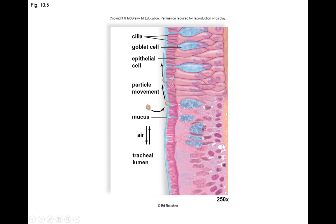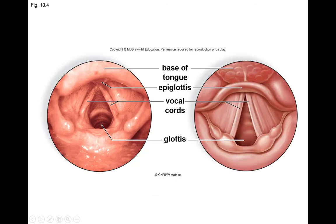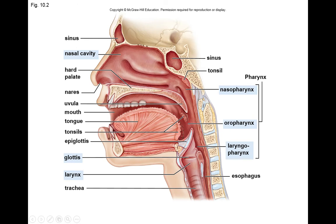A particle suspended in the air that we breathe gets caught on the mucus membrane of the airways, and the cilia beat it up toward the digestive tract. Cilia lining the nose beat that mucus backwards toward the back of the nasopharynx, and we swallow it down to the esophagus.